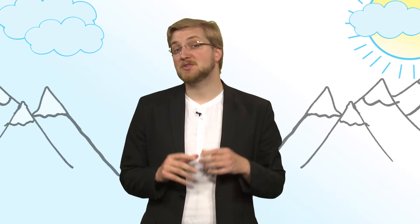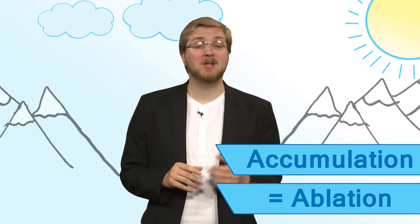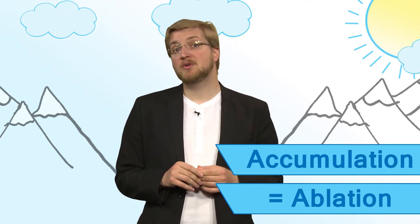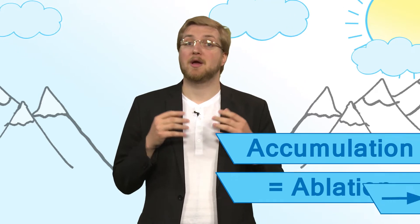In our previous video showing that glaciers are moving, I said that the ice was forming from snowfalls in the upper part of the glacier, over the equilibrium line, and was melting in the lower part, under the equilibrium line. That's of course an extreme simplification. And if the ice formation, also called accumulation, and the ice melt, called ablation, are equivalent,